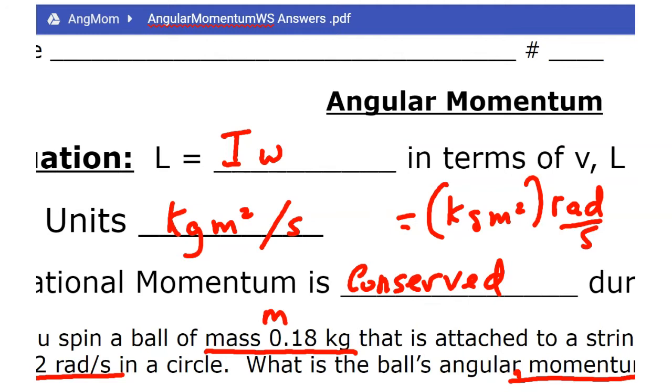The units are kilograms meter squared per second. You could also write kilogram times meter squared, the units for moment of inertia times radians per second, which is ω. For some reason, it's acceptable to leave out the radians.